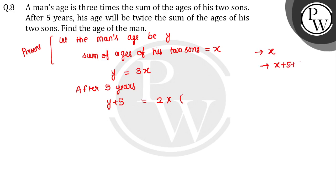X plus five plus five. Two sons' ages plus five each, so that becomes x plus ten.